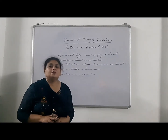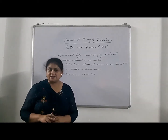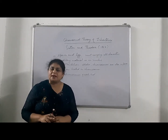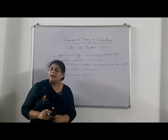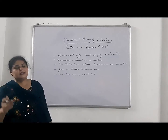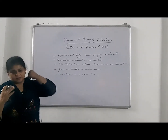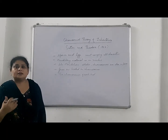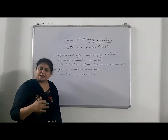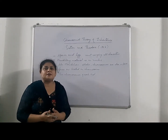Today we are going to start with a new topic of this chapter: Chromosomal Theory of Inheritance. This theory was given by Sutton and Boveri in 1902. According to their theory, eggs and sperm must be carrying all the hereditary characters or genetic material which is transferred from one generation to another, because eggs and sperm act as a bridge between the two generations.